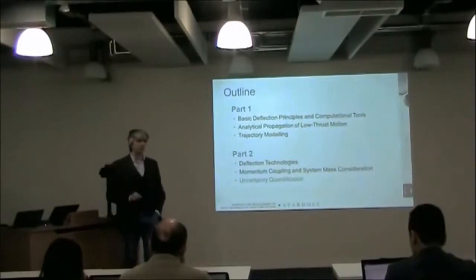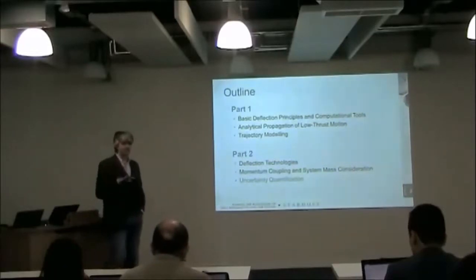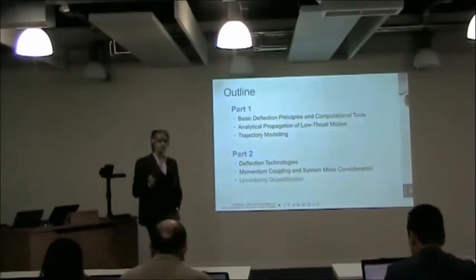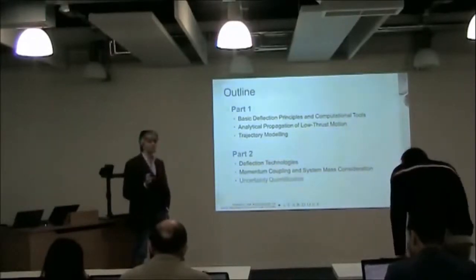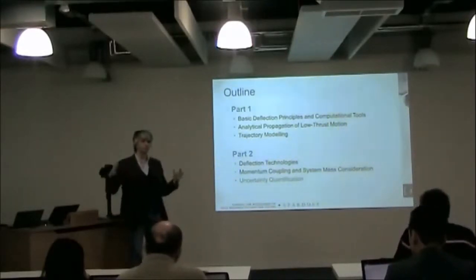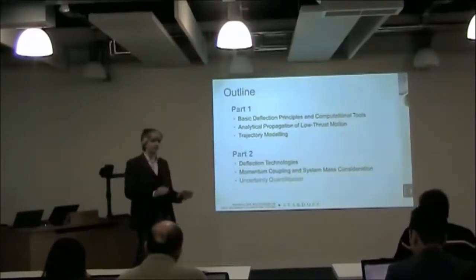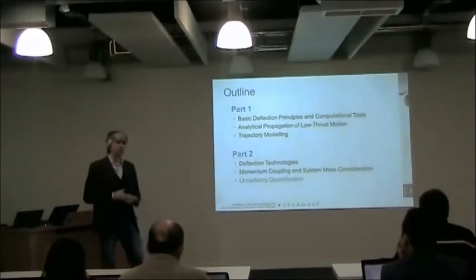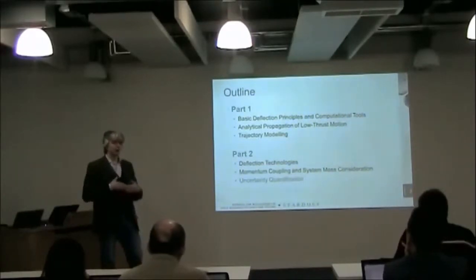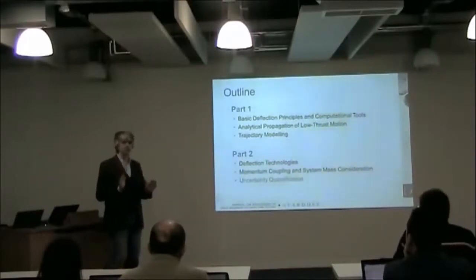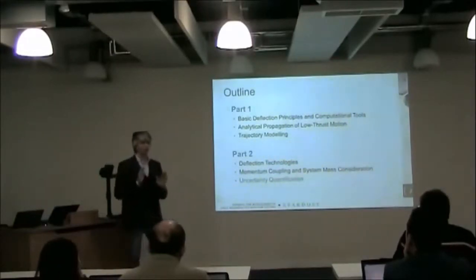Tomorrow I'm showing you a little bit more about how to model some of the technologies that are used to deflect asteroids. I want to make some considerations on the advantage and disadvantage of some of these techniques, looking at two particular metrics: the momentum coupling and the deflection system mass — the amount of mass that you need to produce a given deflection. And if there is still time, I will also give you an idea of how to propagate uncertainties when you try to design a deflection and you want to know how reliable the result is.